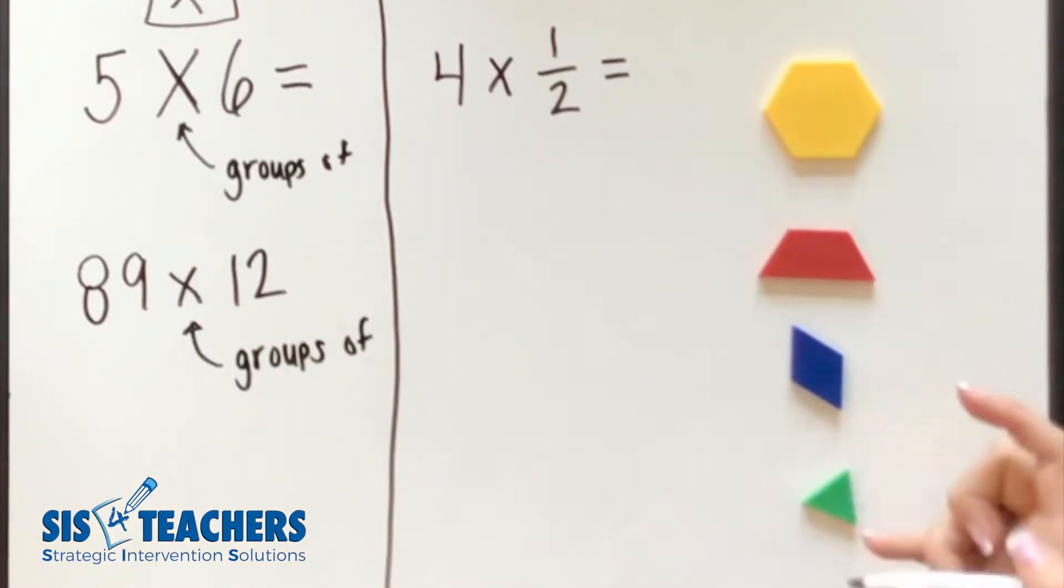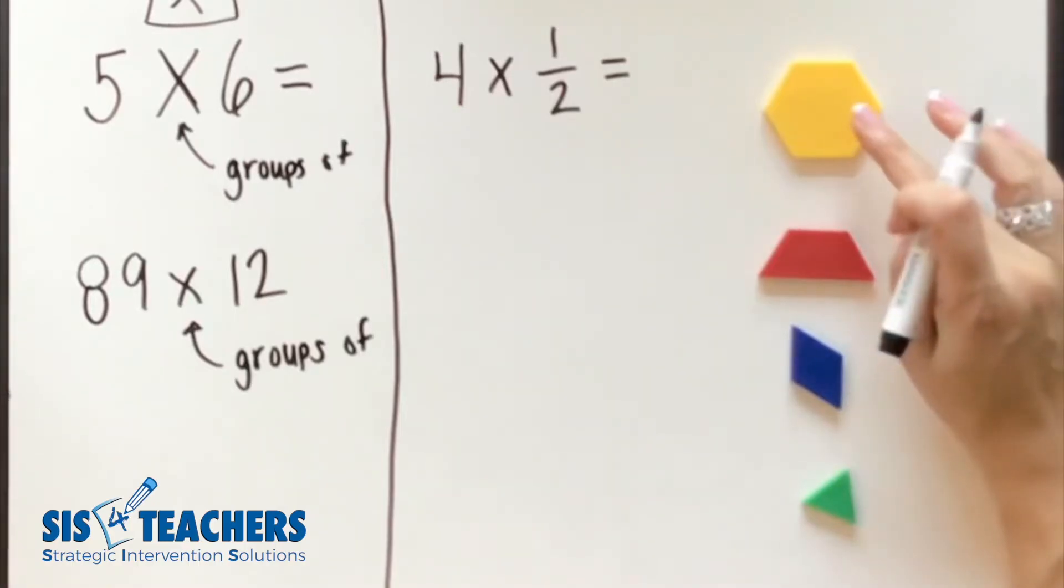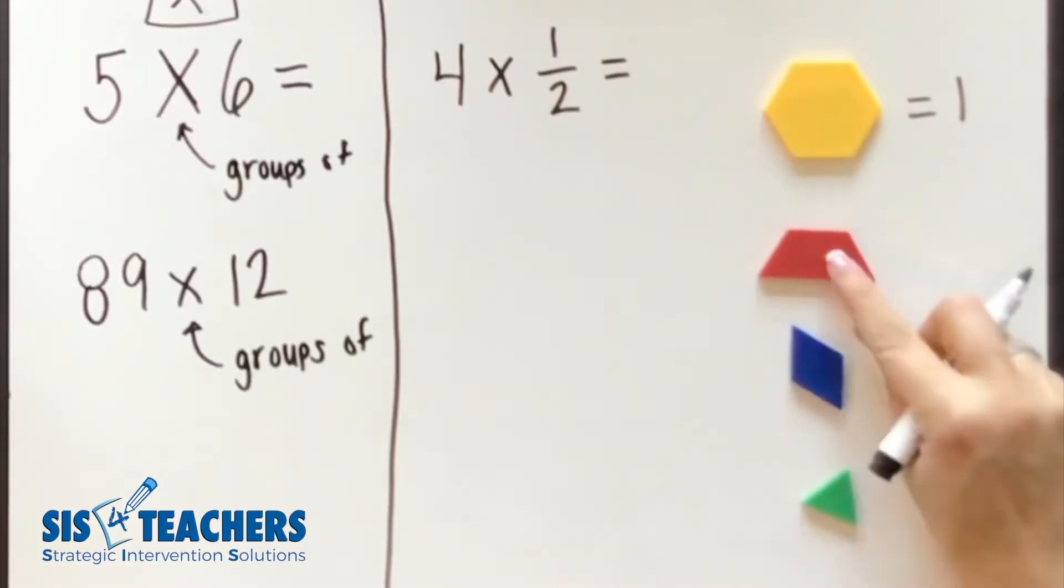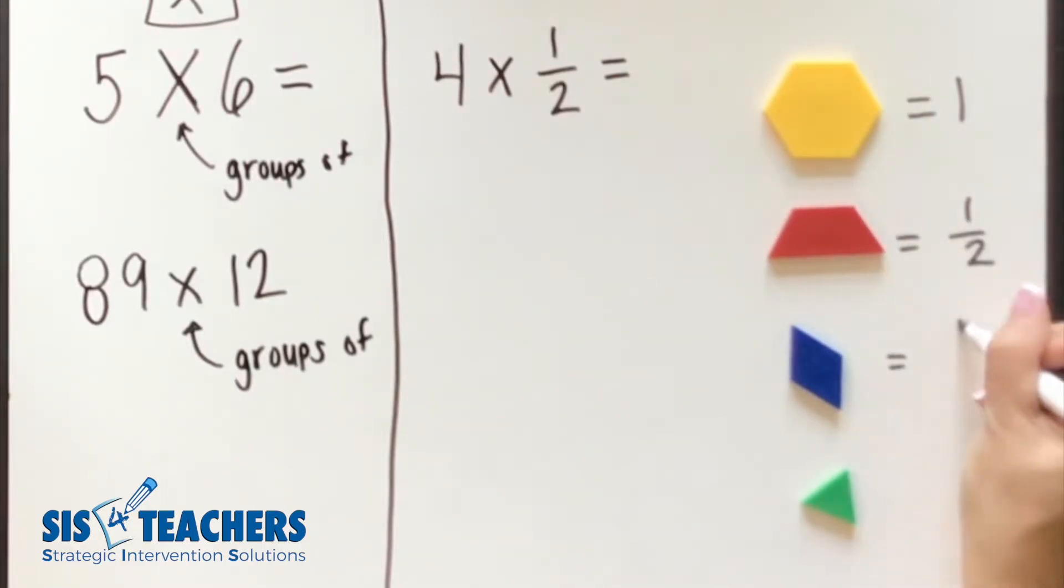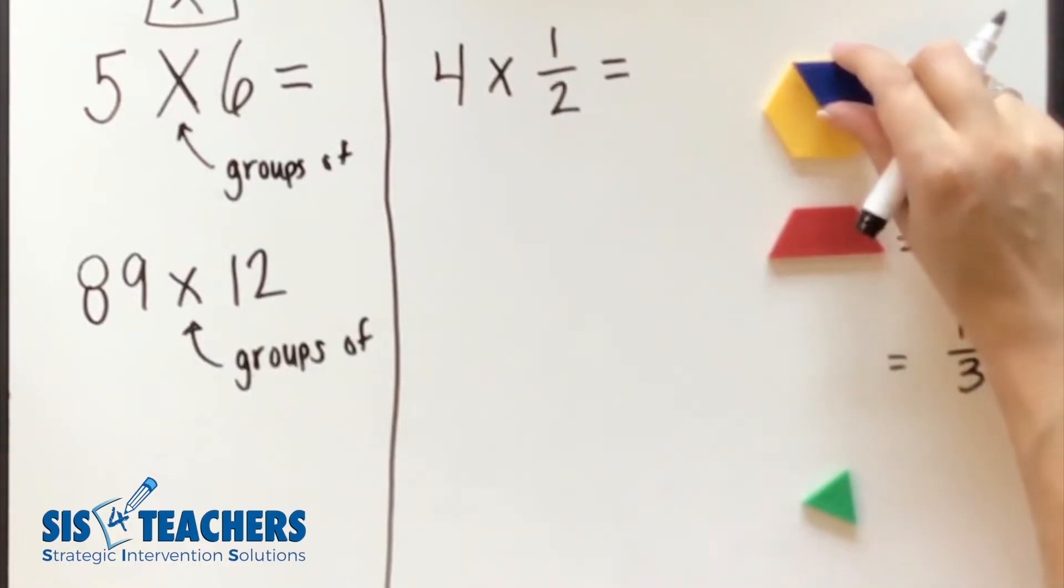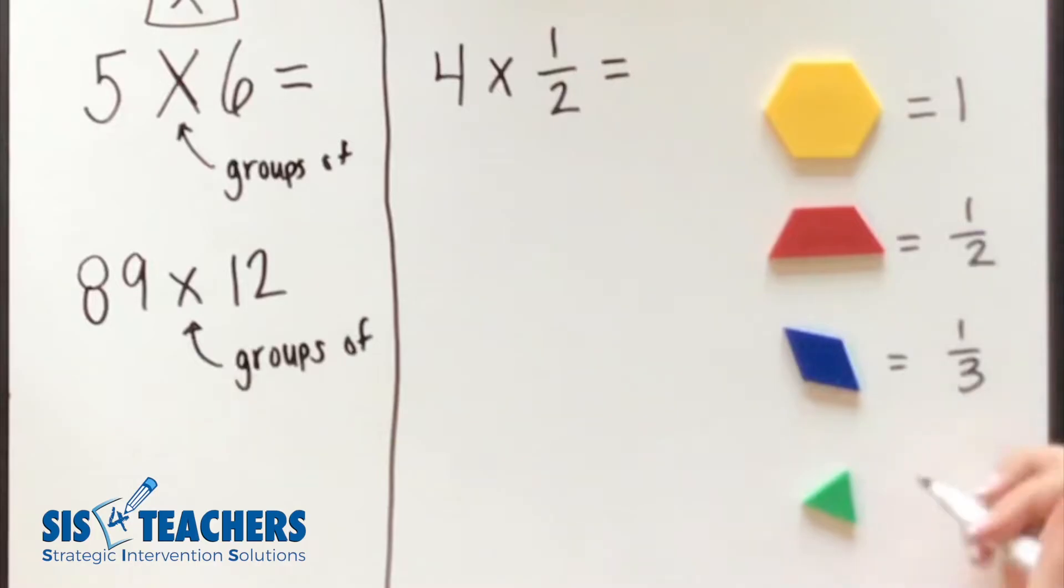We're going to use pattern blocks to model this today. So if I have the hexagon, we're going to have that equal one whole. Our trapezoid is going to be equal to 1/2 as two of these will fit on the whole. Our rhombus is going to represent 1/3 because if we put this unit fraction on top, it will make it thirds. And then the triangle obviously would be six.